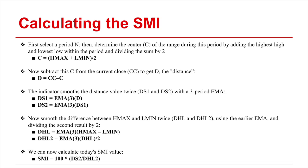The indicator smooths this distance value twice: first by applying an exponential moving average with a standard period of 3, and then multiplying the resulting sum again by the same exponential moving average to produce a double-smoothed distance value.